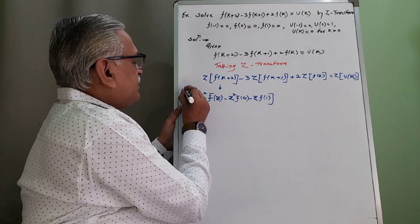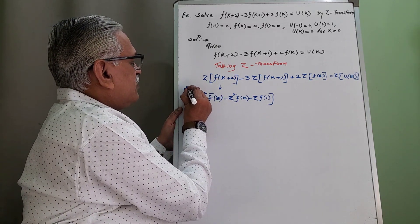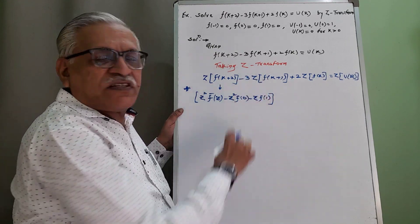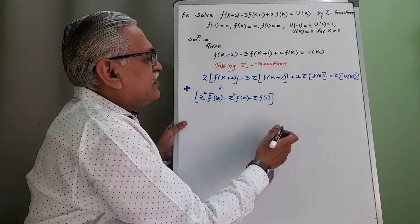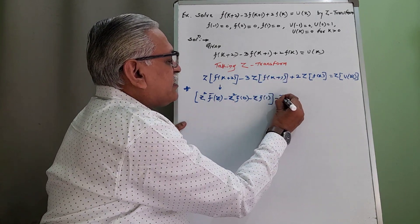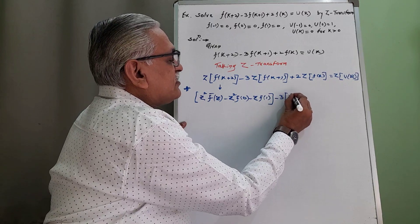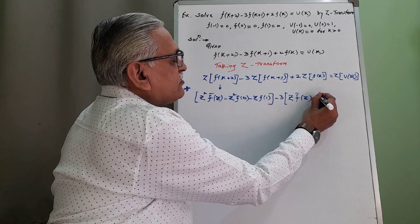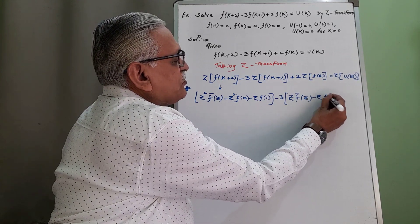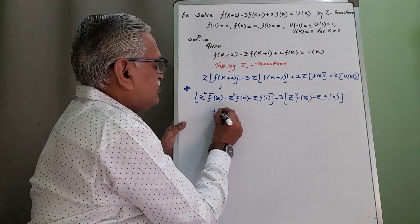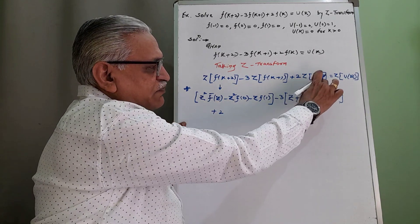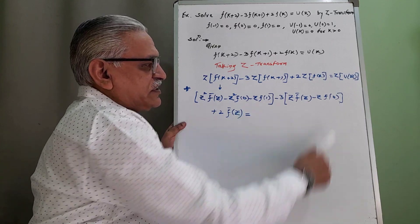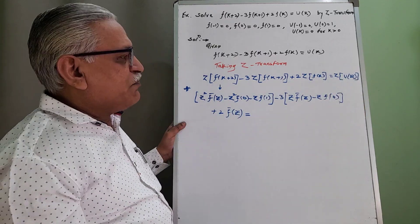Remember this step — it is very, very important. There should not be any single mistake while performing this step. Next, the Z-transform of f(k+1) by standard result is Z·F̄(Z) minus Z·f(0), plus 2 times Z-transform of f(k) which is F̄(Z), and that equals the Z-transform of the unit impulse function.